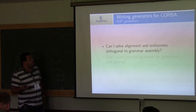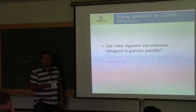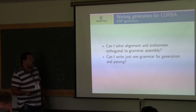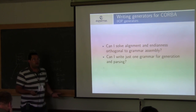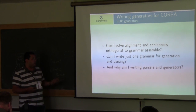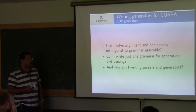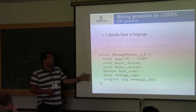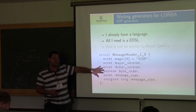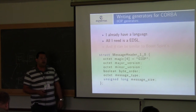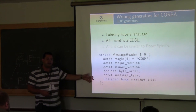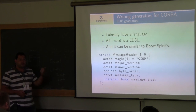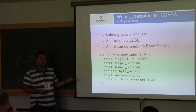We thought about how to solve alignment and endianness in a way that is orthogonal to writing the grammar. Could we write just one grammar for both generation and parsing since they are mostly the same? Then we thought: why am I writing parsers and generators at all? I already have a language I need to work with, and all I need is to embed this language into C++. If I can do this, I don't have to worry about writing separate parsers and generators — the format specification could create both for me.